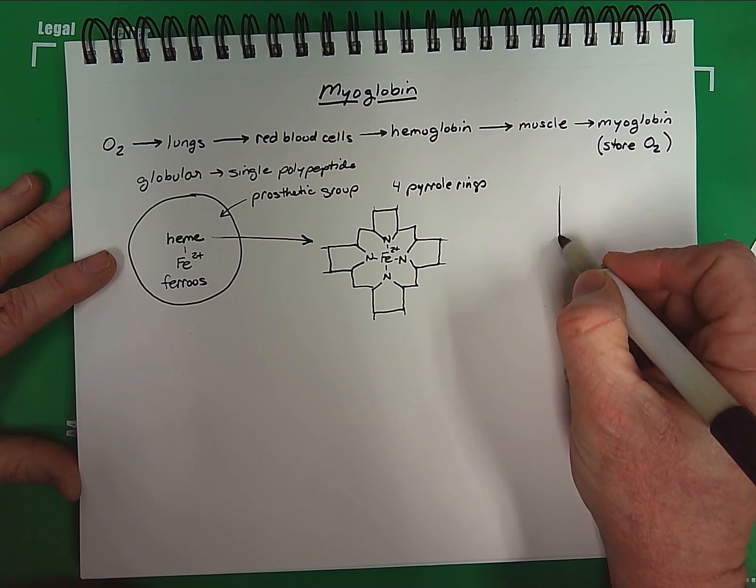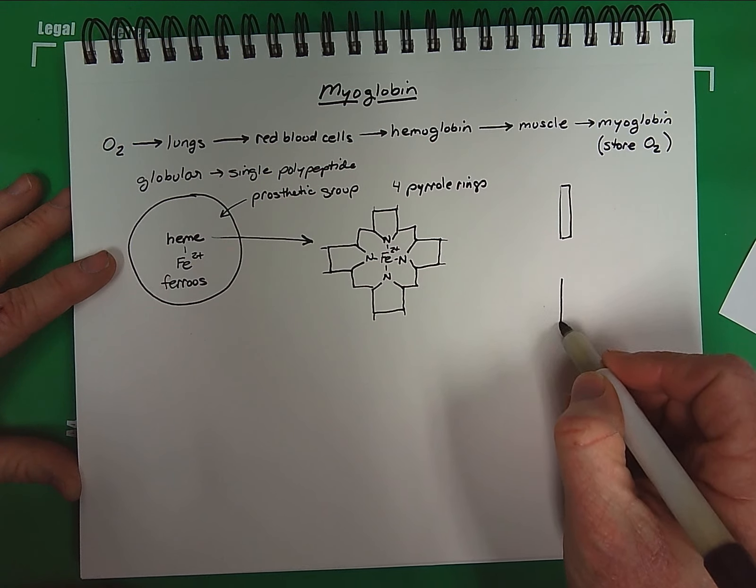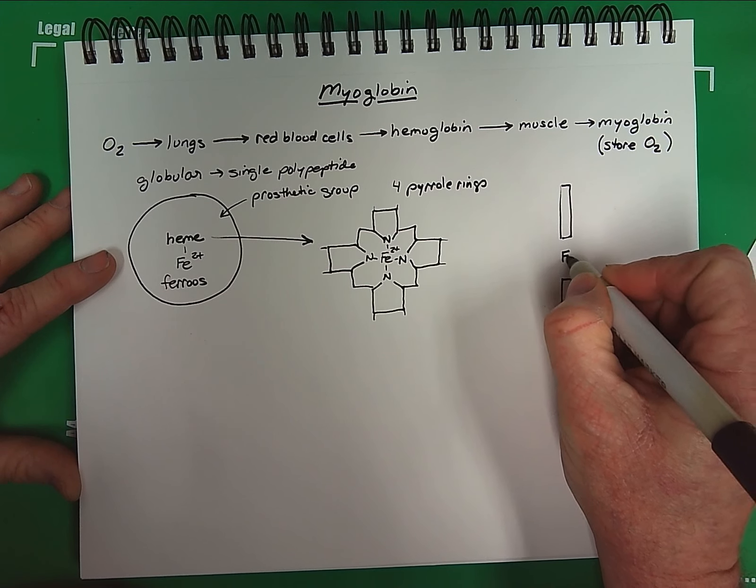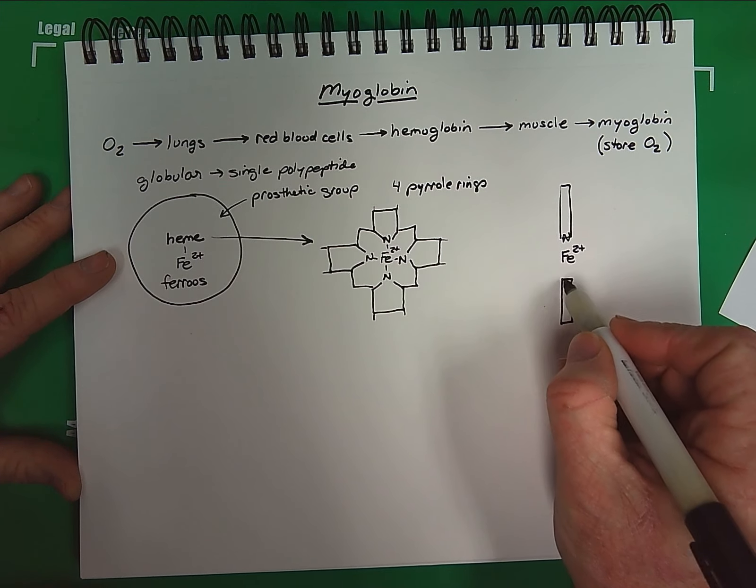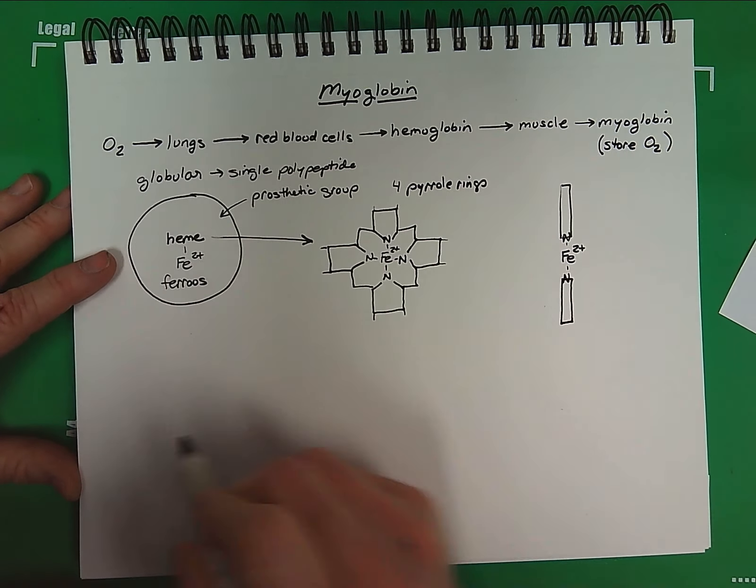So let's turn the pyrrole structure 90 degrees, and we will place our iron in the center here because of the nitrogens that are coordinating this interaction with iron to hold it in place.